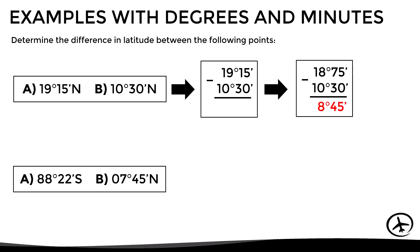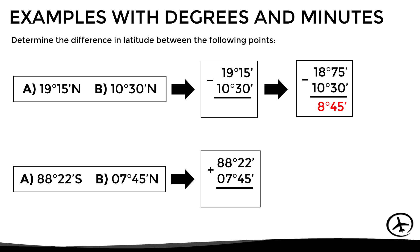In this second case the points are located in different hemispheres, so we have to add the latitudes. In this case we obtain 95 degrees and 67 minutes. However, to express it correctly we need to convert 60 of those minutes to 1 degree, then obtaining a difference in latitude of 96 degrees and 7 minutes.